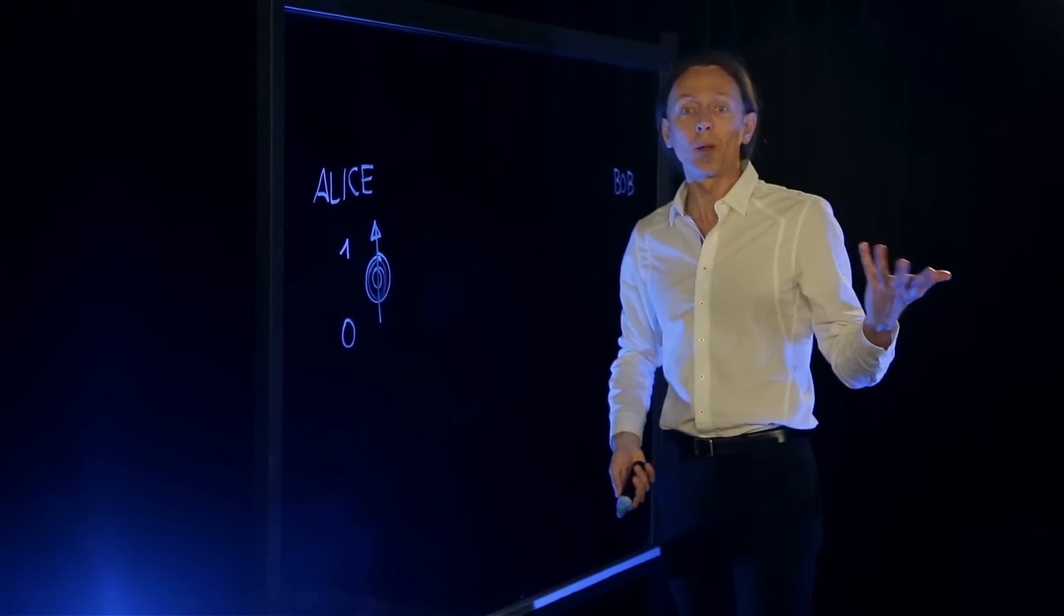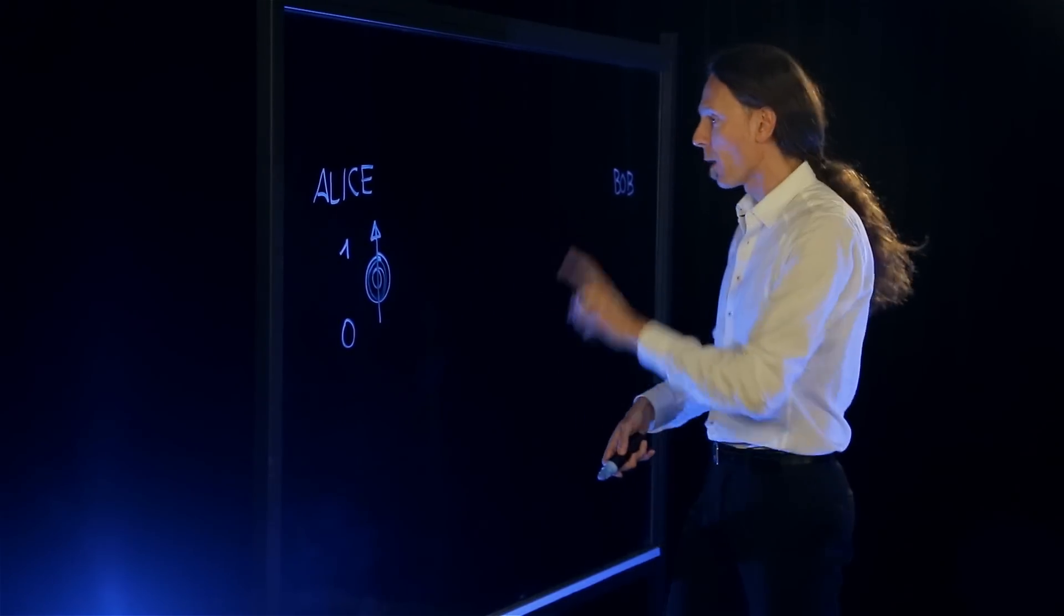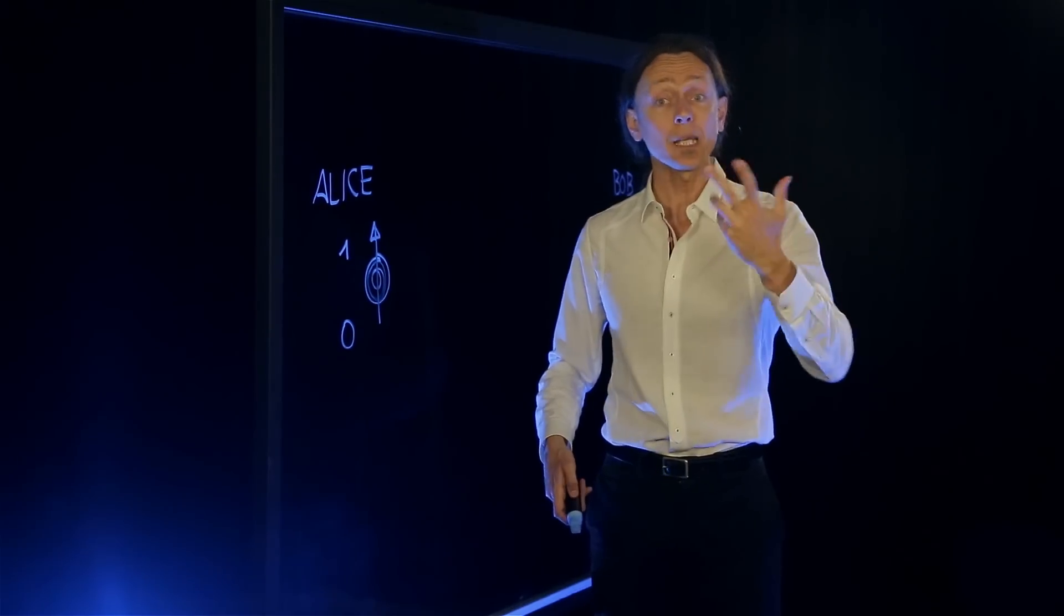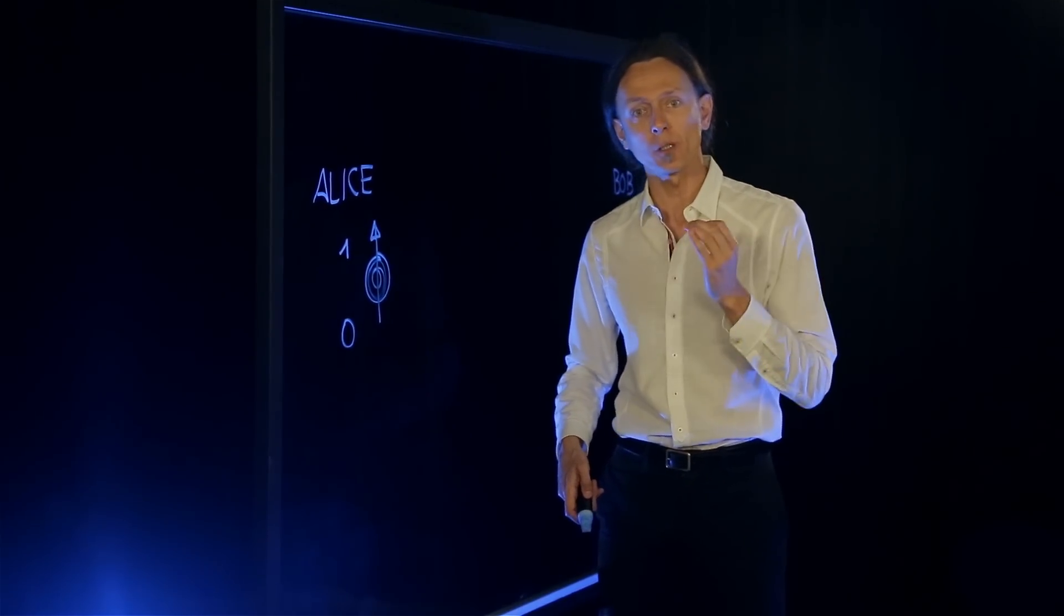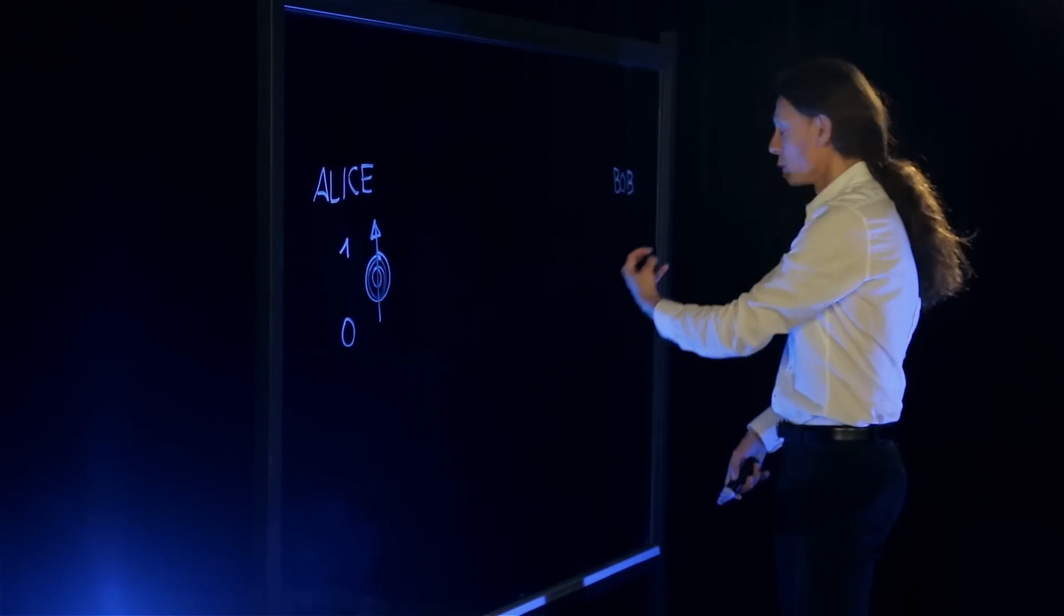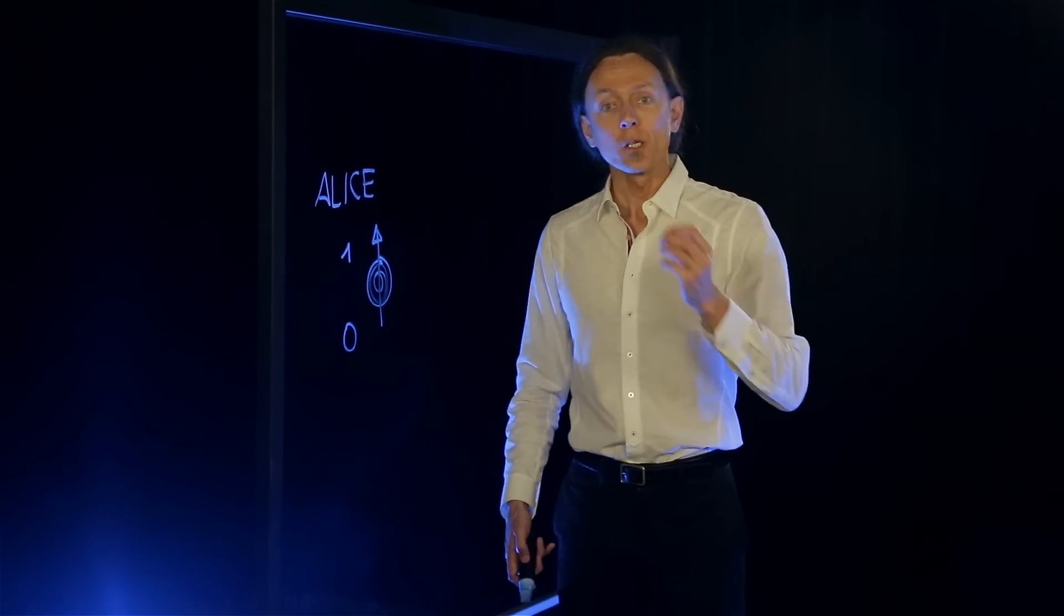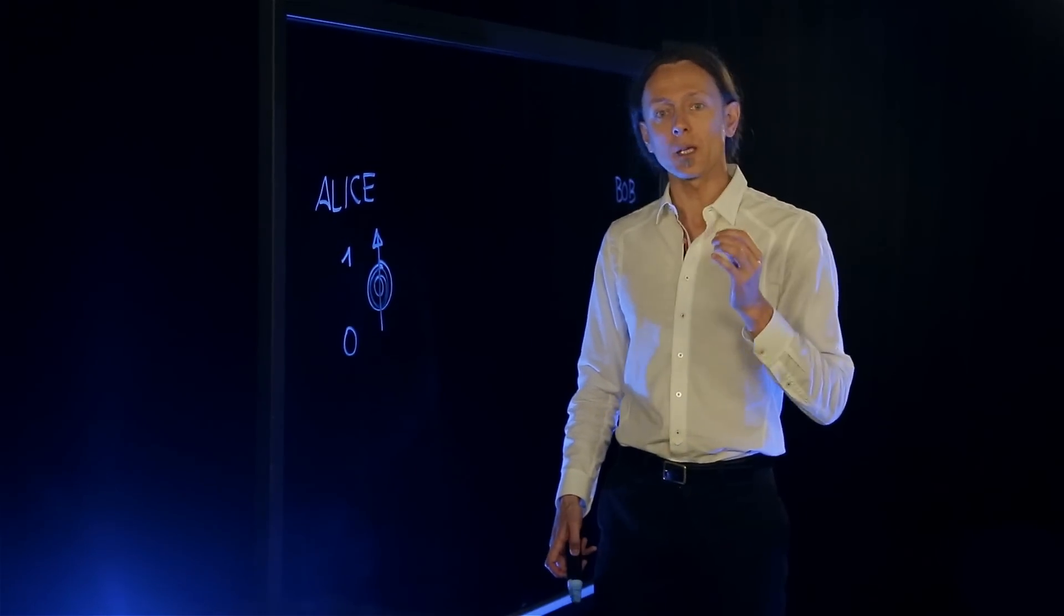And Alice wants to tell Bob what binary number she has. Now the normal way to do it would be for Alice to send an email to Bob and say, hey Bob I have a one. But that email can be intercepted so it's not a secure way of communication. She could physically move the electron to Bob, send it via courier, but the courier could be hijacked.